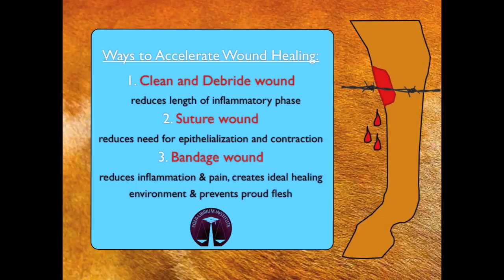There are three basic ways to accelerate wound healing. Number one is to clean and debride the wound, which reduces the length of the inflammatory phase of healing. The second way is to suture the wound closed if possible, reducing the need for epithelialization and contraction. The third way is to bandage the wound, which reduces inflammation and pain associated with swelling and creates an ideal healing environment. Proper bandaging protects the wound and limits mobility, thereby reducing proud flesh.